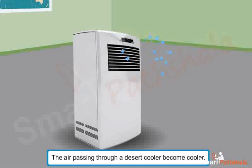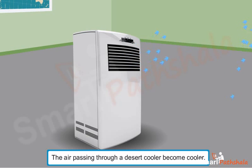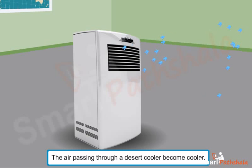Similarly, the air passing through a desert cooler becomes cooler. This is because, in a desert cooler, hot and dry air passes through wet pads of wood shavings. Water takes heat from the hot air and evaporates. The evaporation of water cools the pads and the circulating water too. As a result, the air passing through a desert cooler becomes cooler.